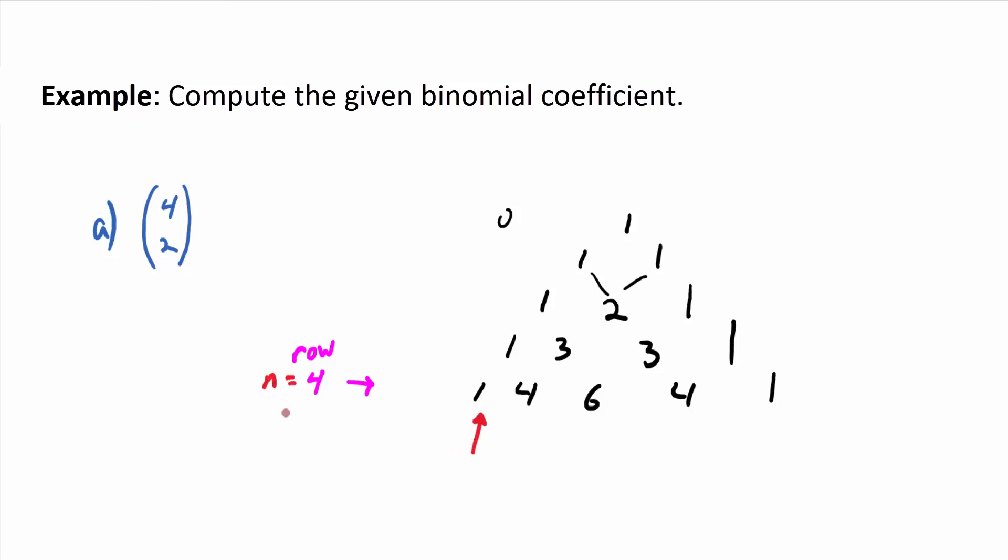So this 4 right here is denoted as 4 choose 1. And this 6 right here then would be what? 4 choose 2. So it's equal to 6.